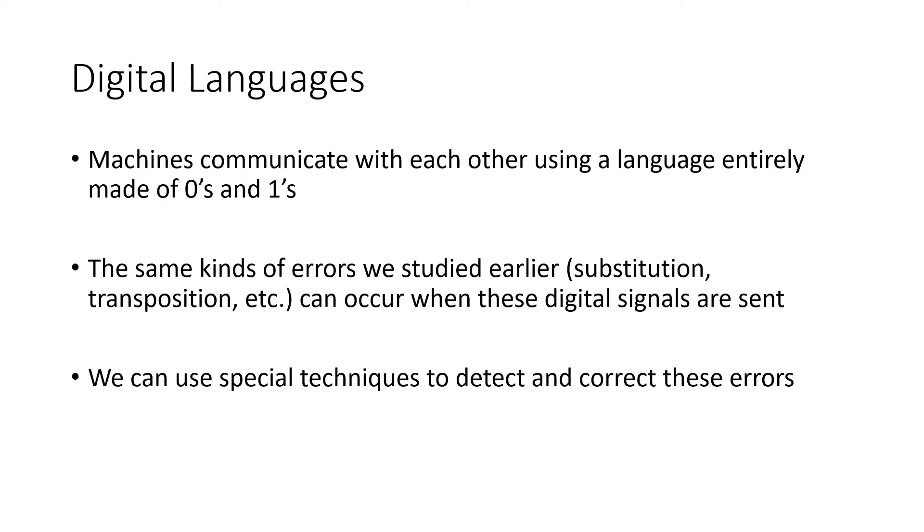Now, when we're talking about communicating between devices or machines, machines communicate with each other using a language entirely made of zeros and ones, which we call binary. Any language where the only options for our characters are zero and one, we call that binary. But the same kind of errors that we talked about earlier, substitution errors, transposition errors, these kinds of things can occur when we're looking at digital signals, these binary signals. And we can use special techniques. Because we're limited to only zeros and ones, that actually turns out to be an advantage for us to be able to detect and correct these errors.